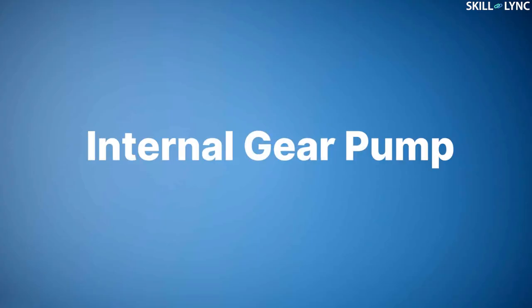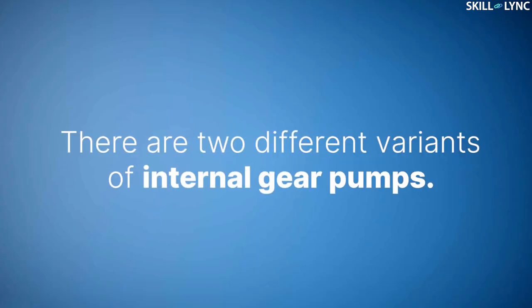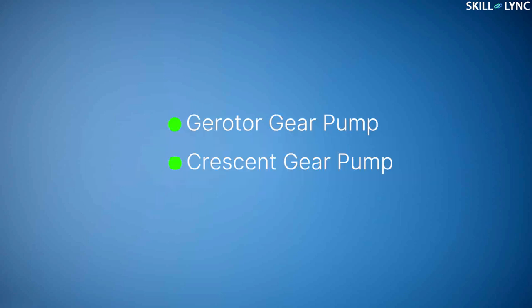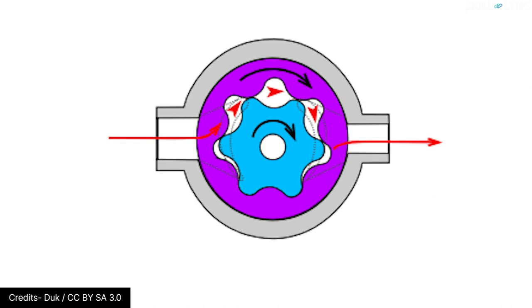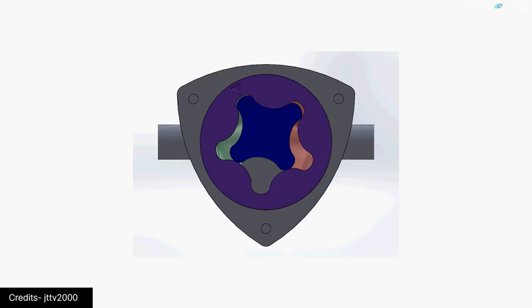The next type of gear pump is called the internal gear pump. There are two different variants of internal gear pumps. One is the gear rotor and the other is a crescent gear pump. The gear rotor is a type of gear pump which has two gears arranged one within another. The working of the pump is similar to the external gear pumps.